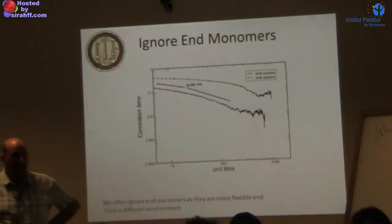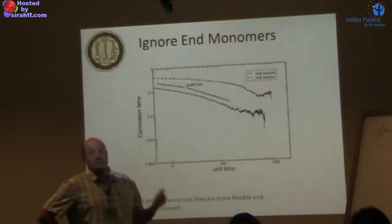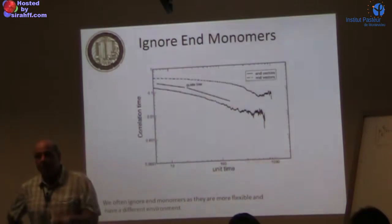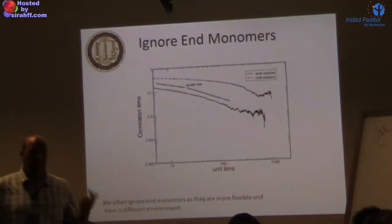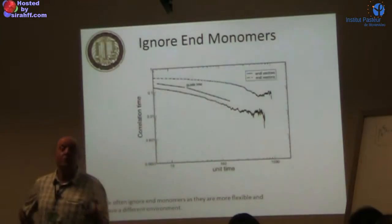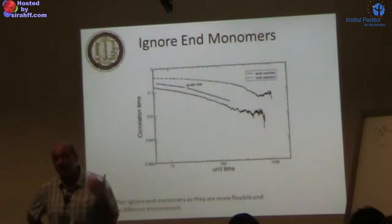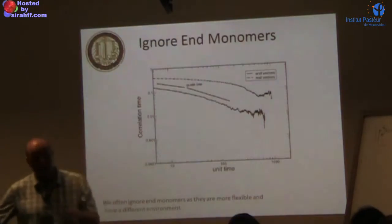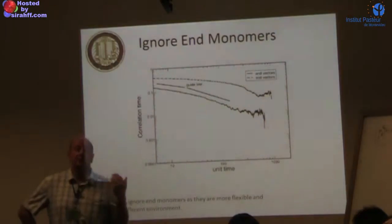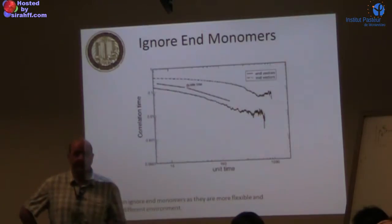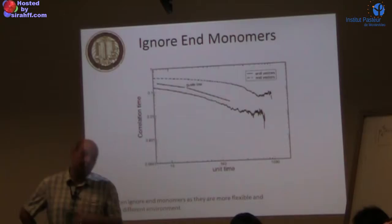Is there a big difference in practice? In the RDFs between end monomers and central monomers, it's normally not a huge difference but it's visible. You could do it either way — it may just take a few more iterations — but normally ignoring end monomers is a more efficient approach.